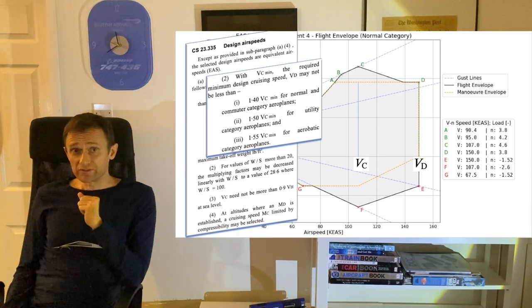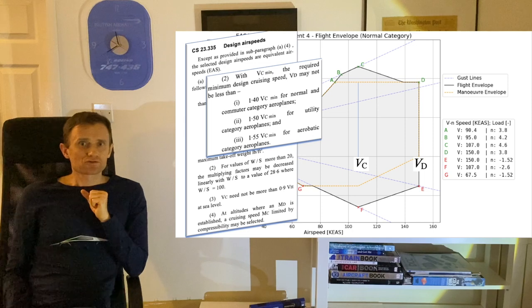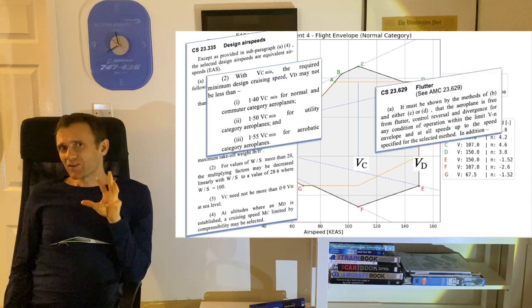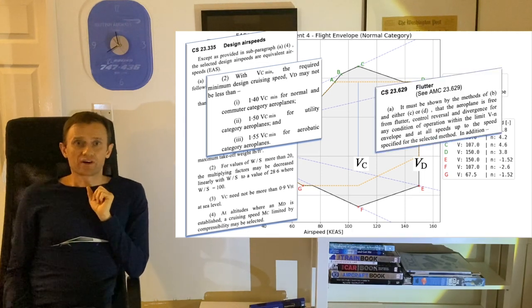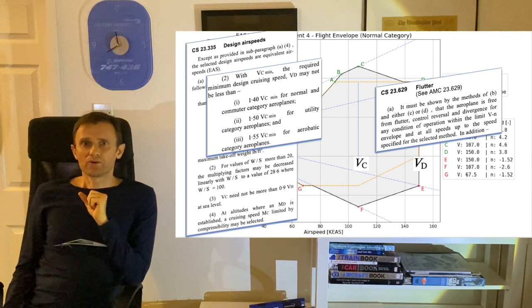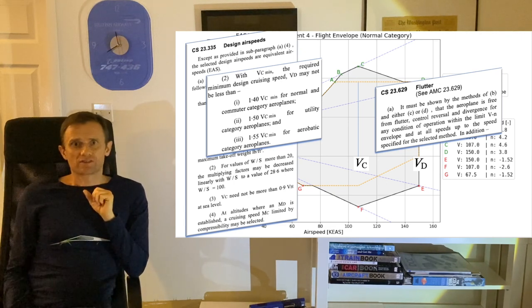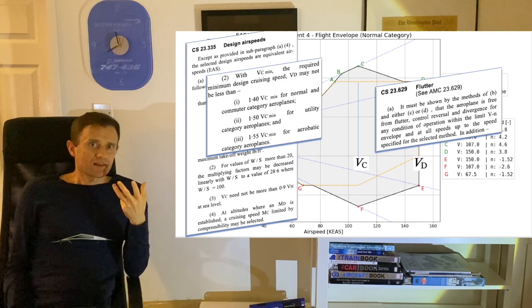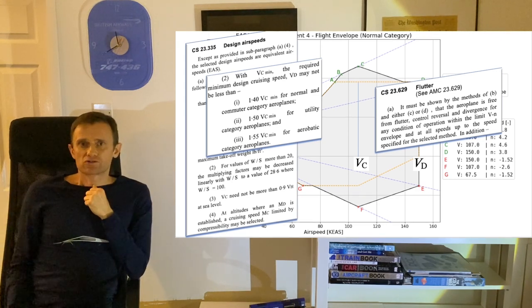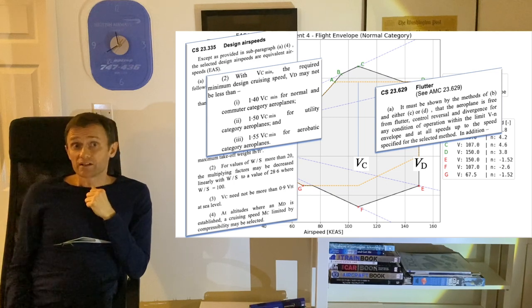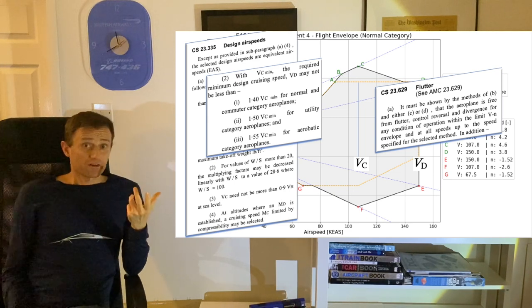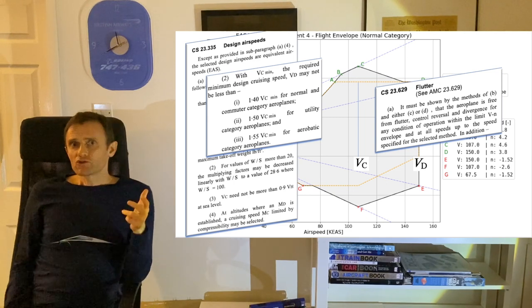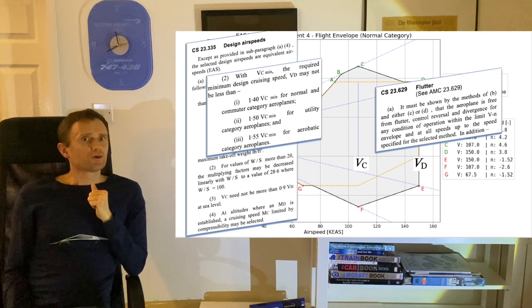When choosing VD, the designer must also bear in mind the various aeroelasticity related issues of high speed flight. See for example the stipulations in CS 23.629, such as that any rational analysis used to predict freedom from flutter, control reversal, and divergence must cover all speeds up to 1.2 VD.